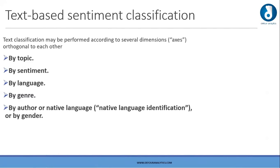In text-based classification, it is subdivided by topic, by sentiment, by language, by gender, and by author. For example, with ebooks, we segregate according to user specification based on what they previously ordered. By gender, each user has a different perspective — some like fiction, some like comedy — so we divide according to genre and author. These are some classifications we can do in sentiment analysis; we can also create our own classification.